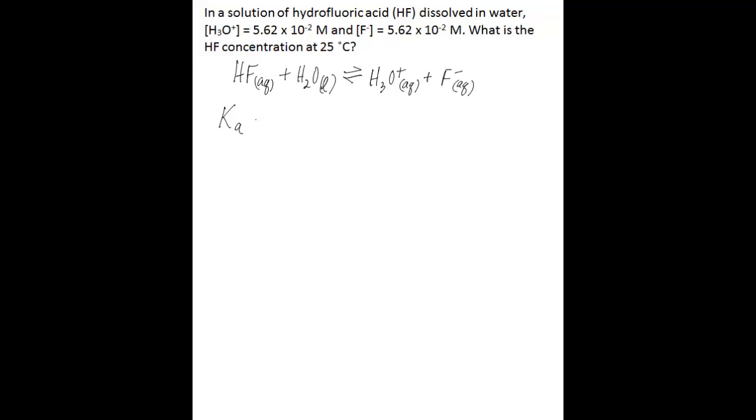So you have Ka, which is the acid dissociation constant, equals products over reactants. So we have the concentration of the hydronium ion multiplied by the concentration of the fluoride ion divided by the concentration of hydrofluoric acid. And we do not include water in this equilibrium equation because water is a pure liquid.